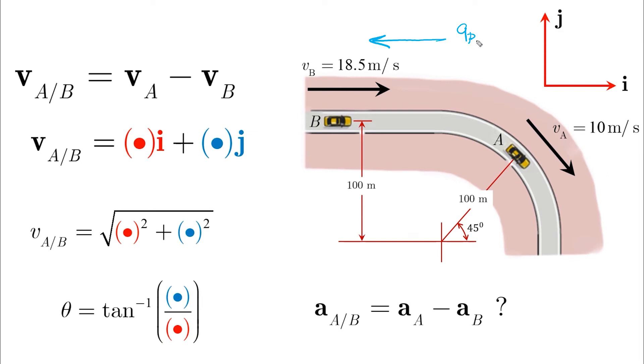And let's say that car A is increasing its speed. In this case A will have a positive tangential acceleration in this direction and also a positive normal acceleration in this direction.